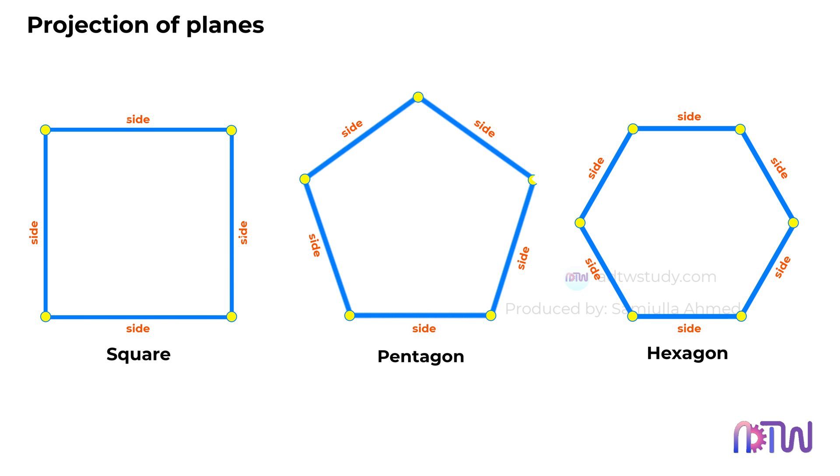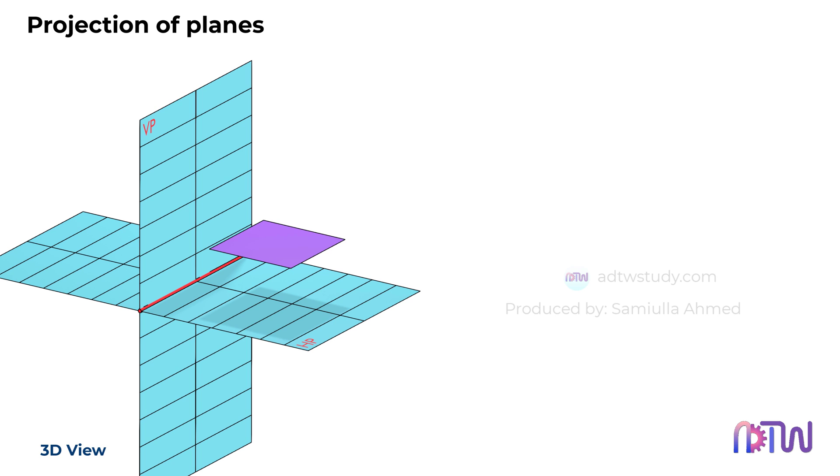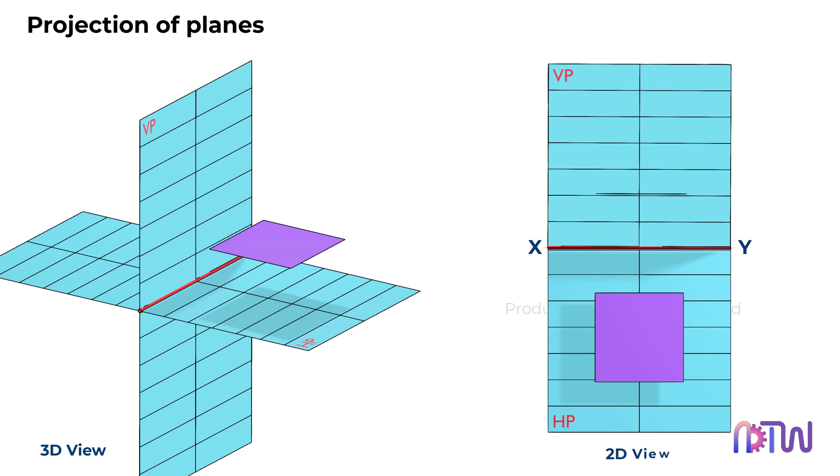To aid our comprehension, we'll use a three-dimensional quadrant system. Imagine a plane positioned within the first quadrant. On the left, we will present a 3D representation of this setup. On the right, we'll display a 2D representation of the same plane for comparison.